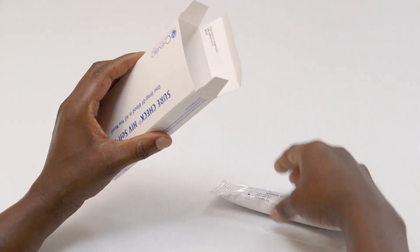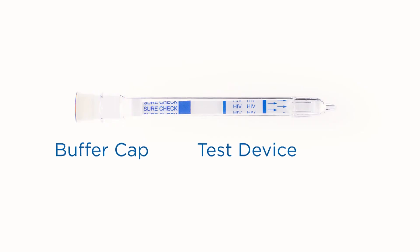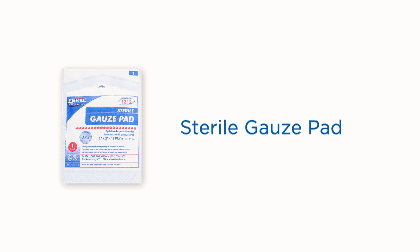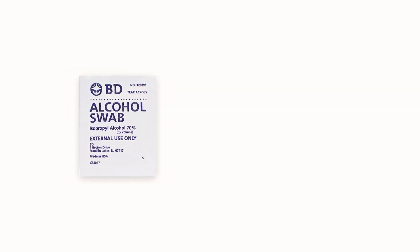The SureCheck HIV self-test contains the buffer cap and test device, bandage, safety lancet, test stand, sterile gauze pad, and alcohol swab.